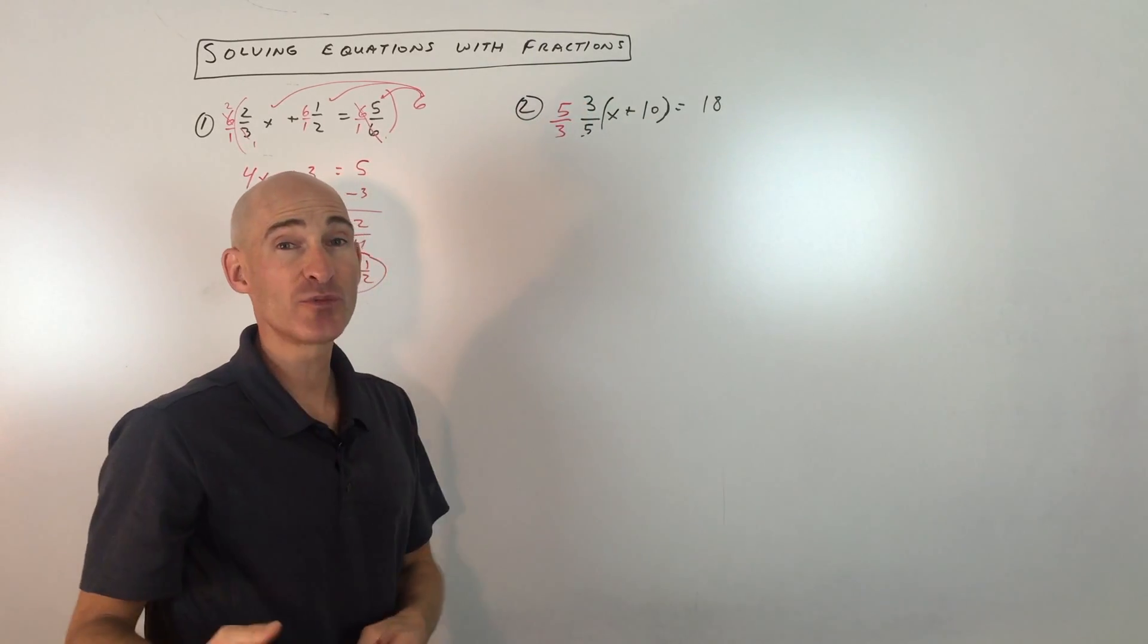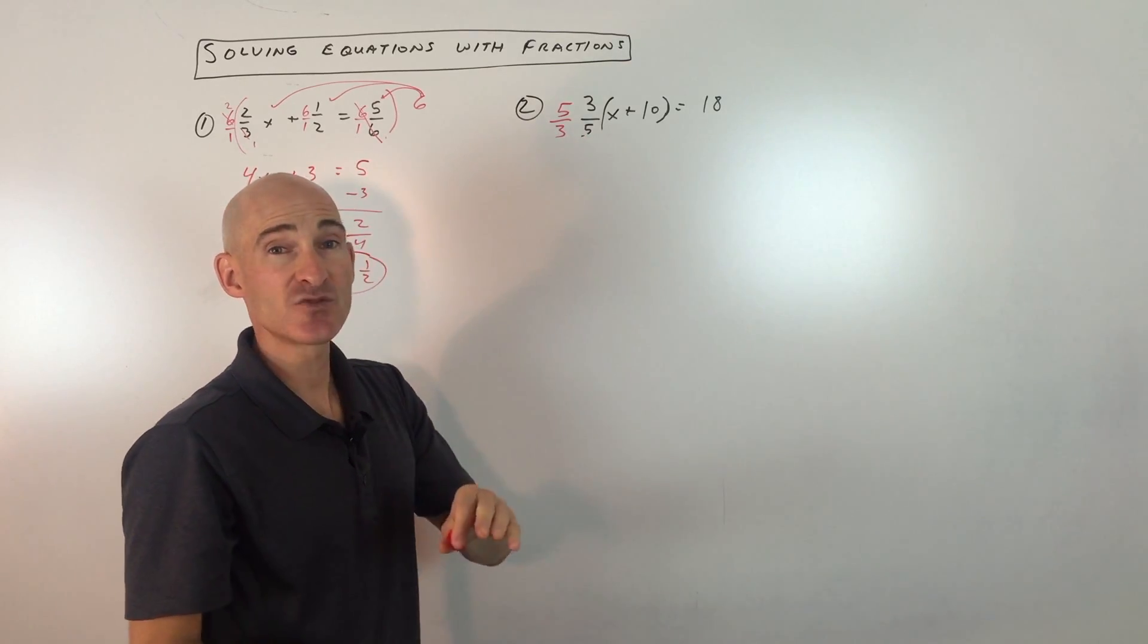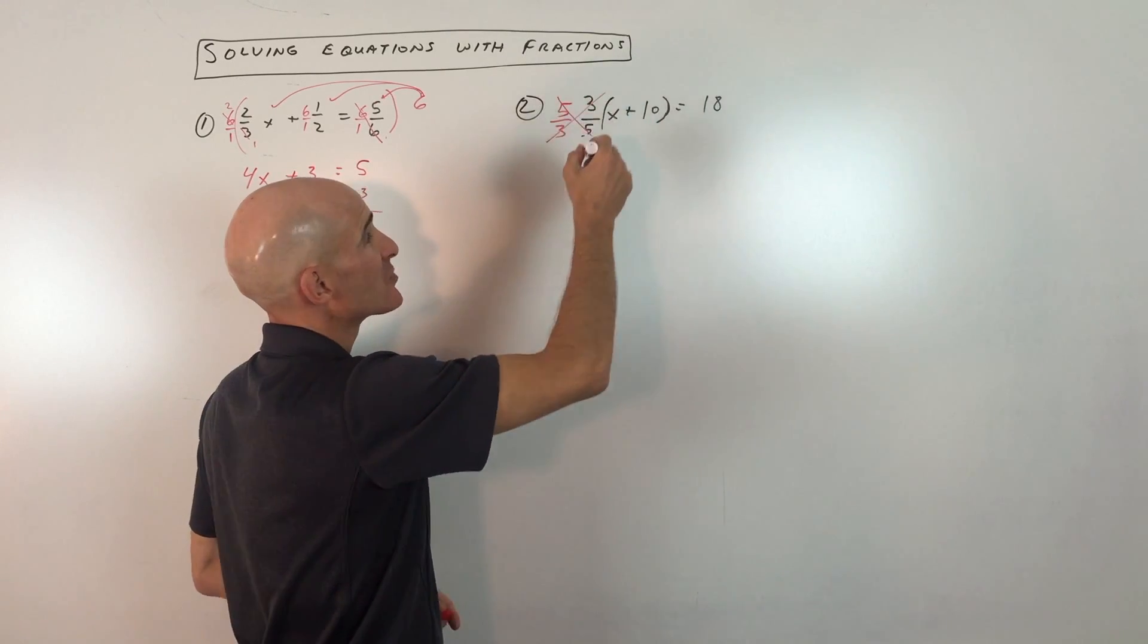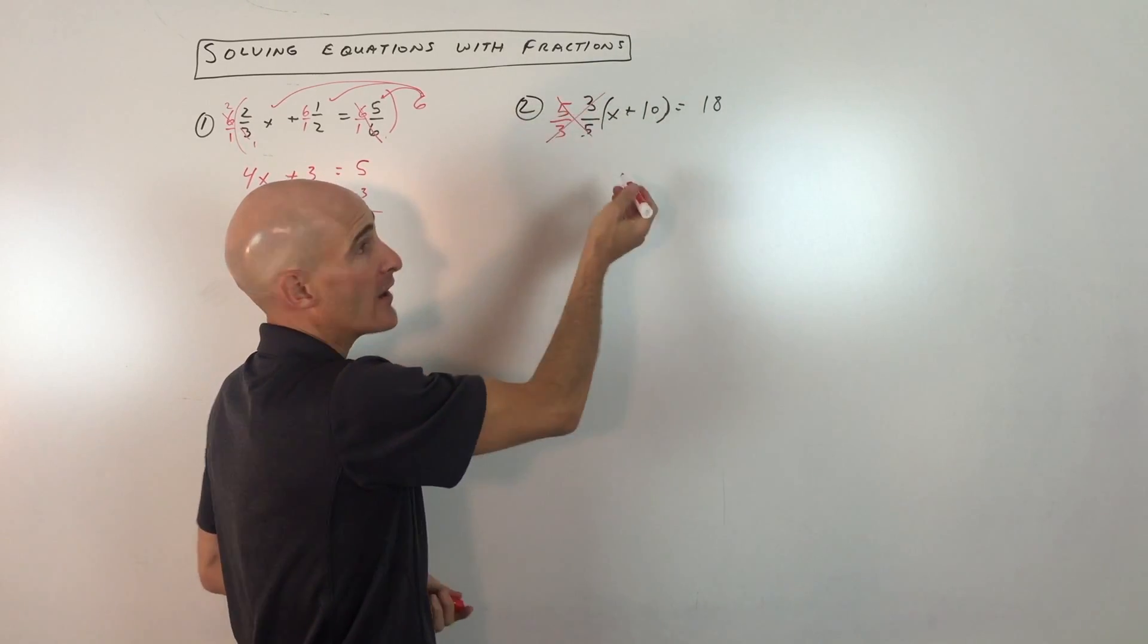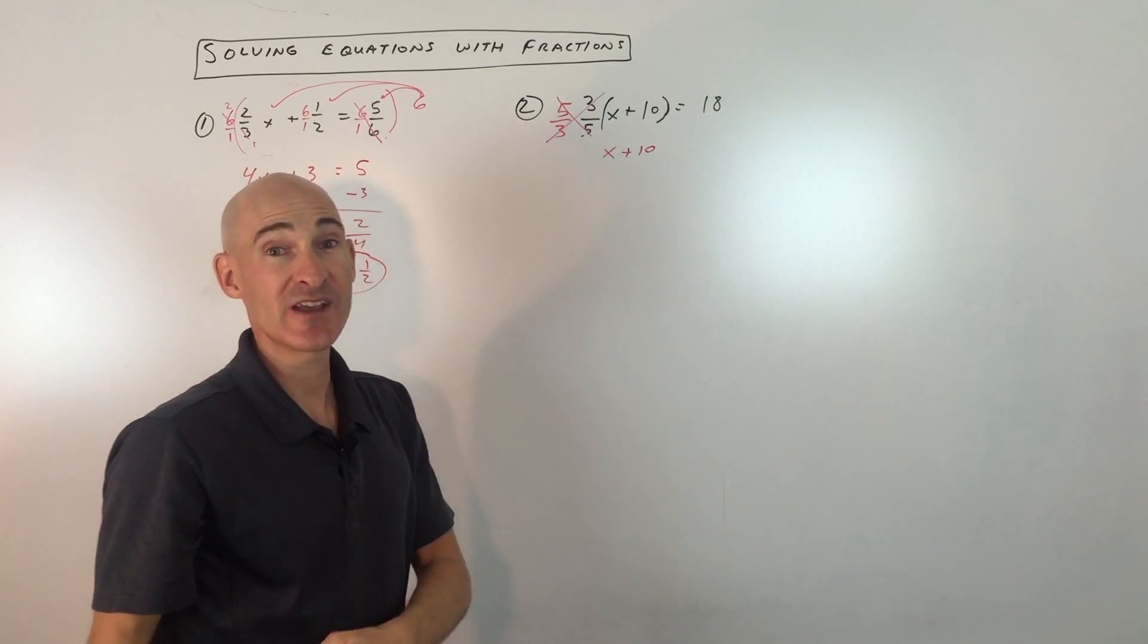This is called the multiplicative inverse, and instead of dividing by 3 fifths, dividing is really like multiplying by the reciprocal. And by doing this, you can see that the 5s are going to cancel, and the 3s are going to cancel, and you're just going to be left with 1. 1 times anything is itself, so now we just have x plus 10 by itself.